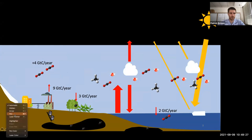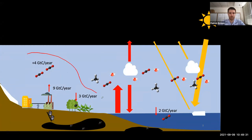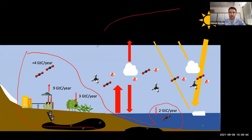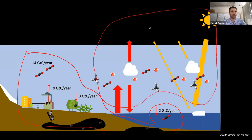Last time we went back and reviewed the carbon cycle — looking at when we emit carbon from burning fossil fuels, where does it go, how does it cycle around the system. Today I'm going to look again at the energy coming in and flowing out, and this idea of temperature and the greenhouse effect and how they all relate to one another.